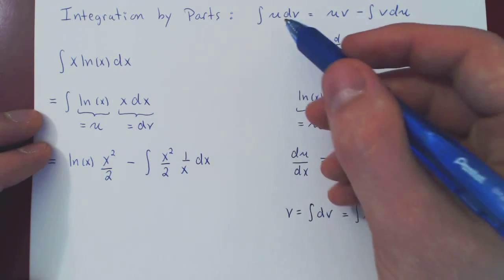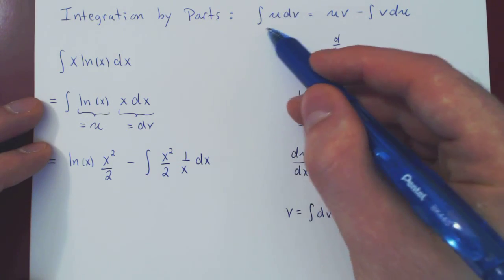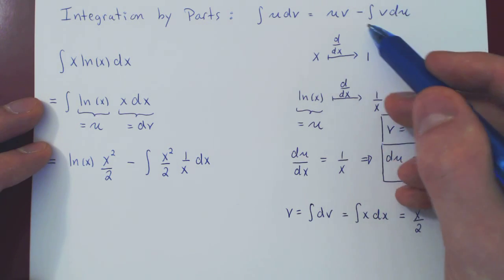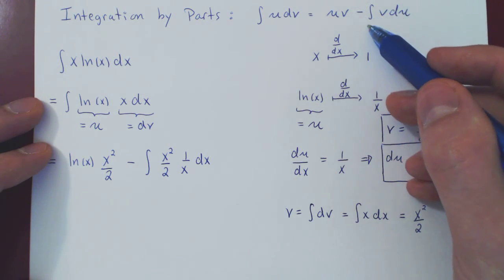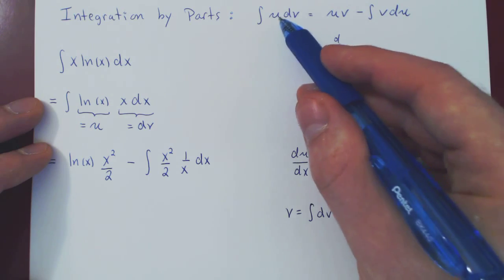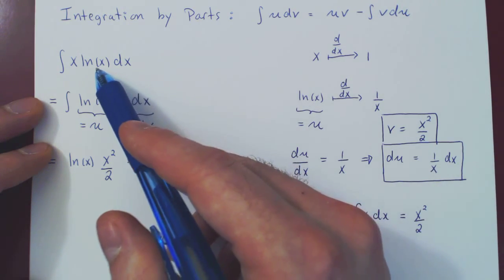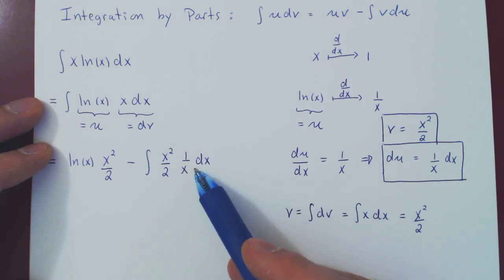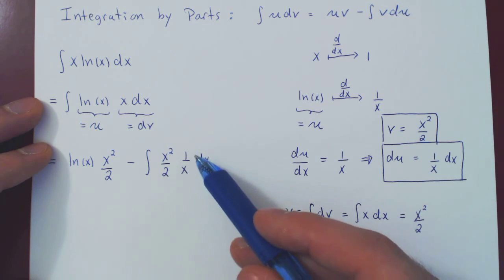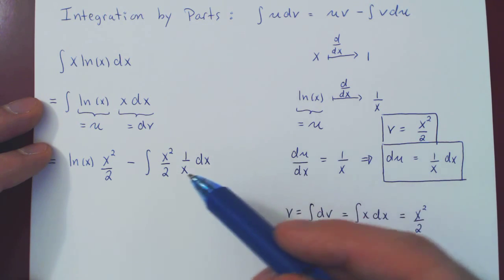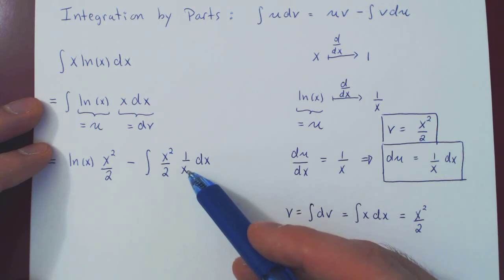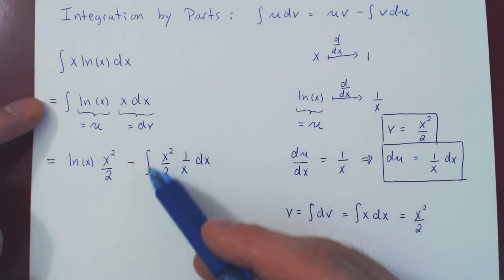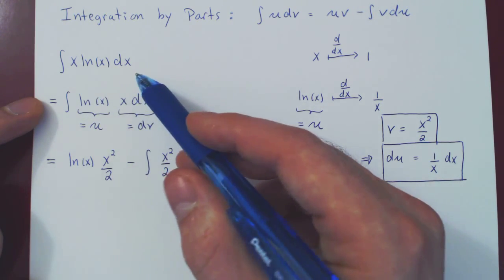And now we have our new problem. So the integral of x ln of x dx is this function minus this integral. And you see the trade-off. We have the original integral, and then we have the new integral. And hopefully, the new integral is easier than the original one. And if you look here, the ln of x has disappeared. After we simplify, we'll have a power rule here, which will be trivial. So indeed, the new integral, after we used integration by parts, is much simpler than the original one. So now we're essentially done.